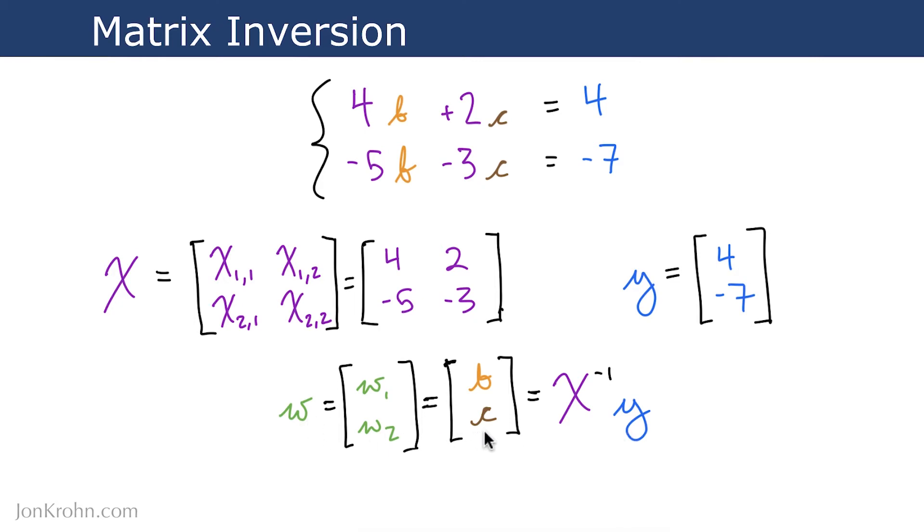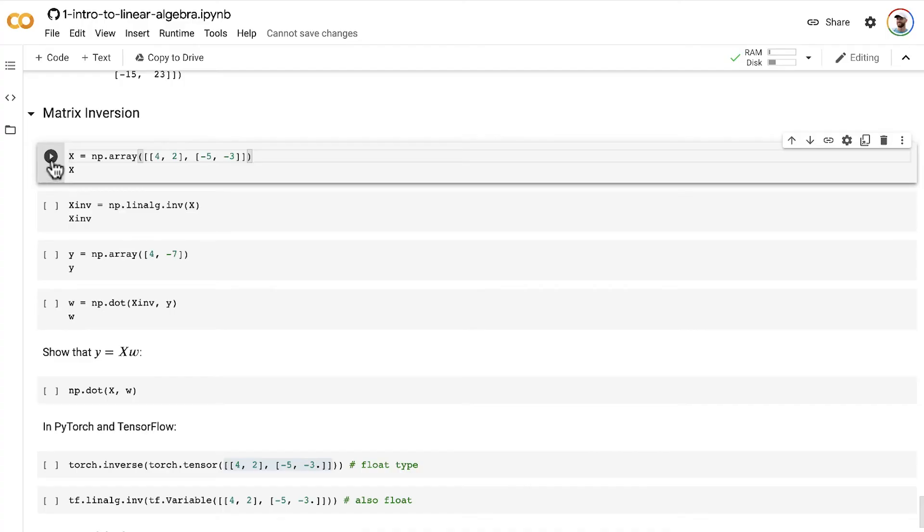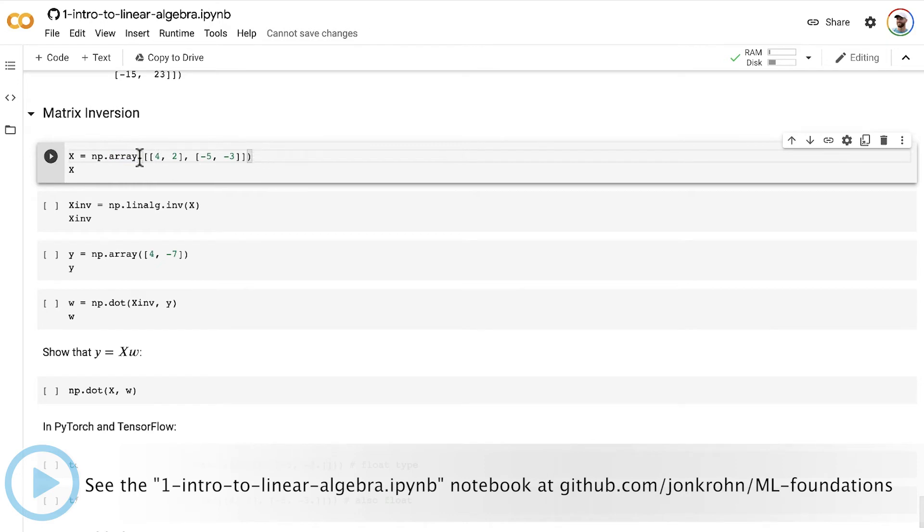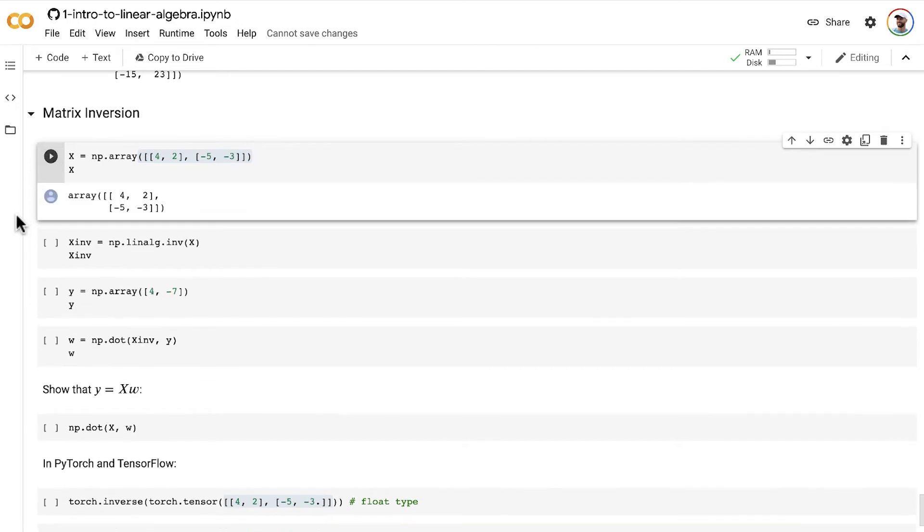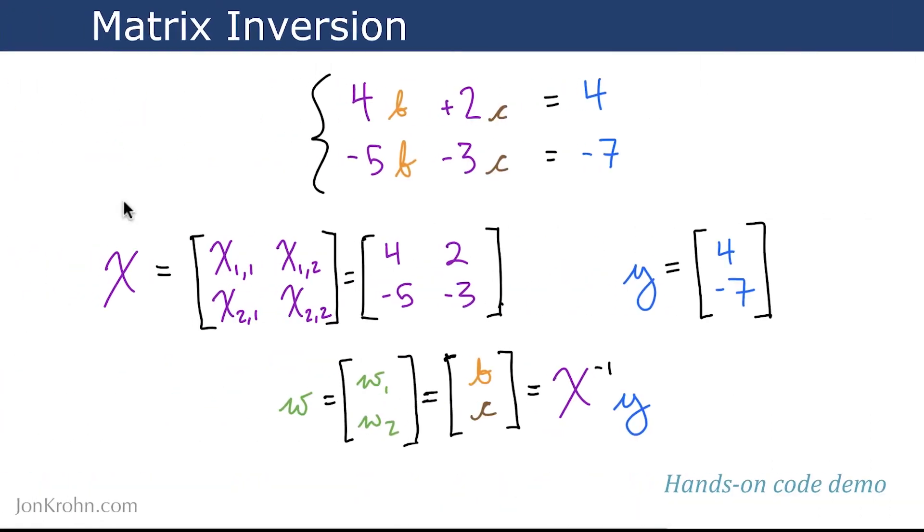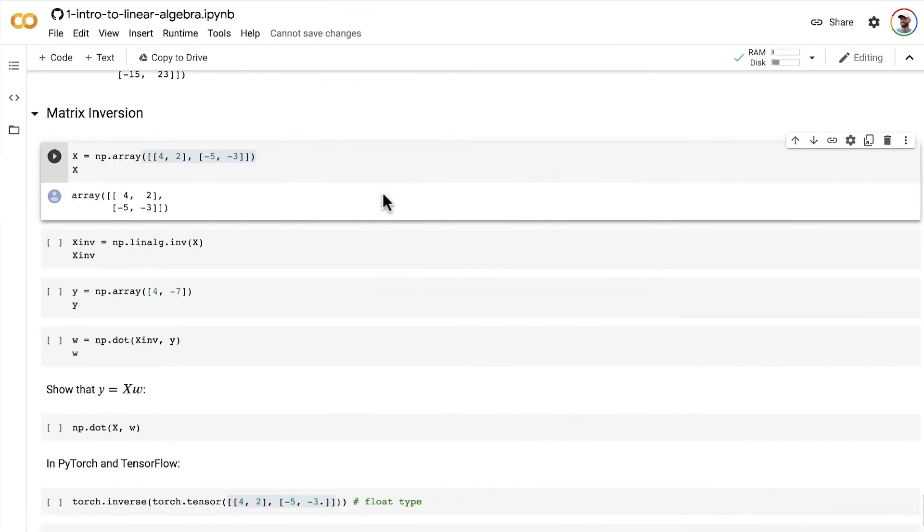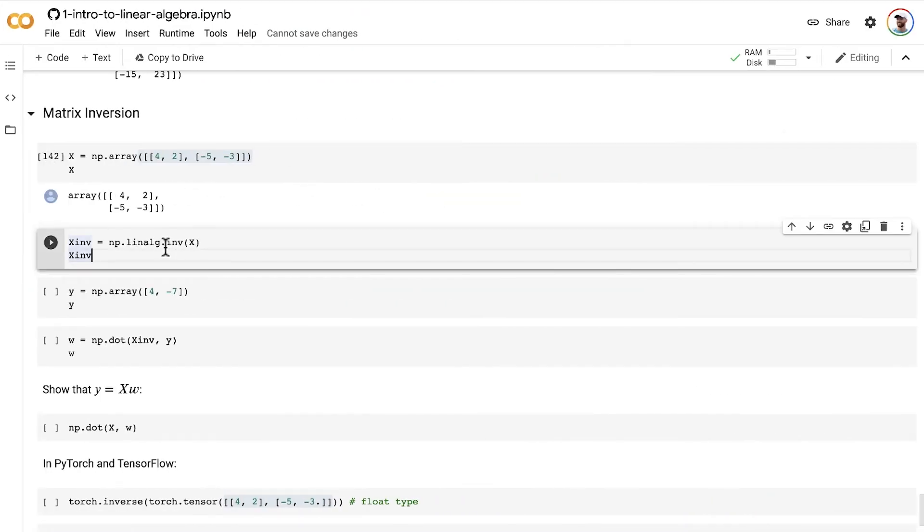So we'll do this in NumPy first. I'm creating a vector x for the features. This is exactly the same as on the slides. 4, 2, negative 5, negative 3 for x, representing the x values. And then we can use a built-in NumPy function in the linear algebra module, inv, which stands for inverse, to calculate the matrix inverse.